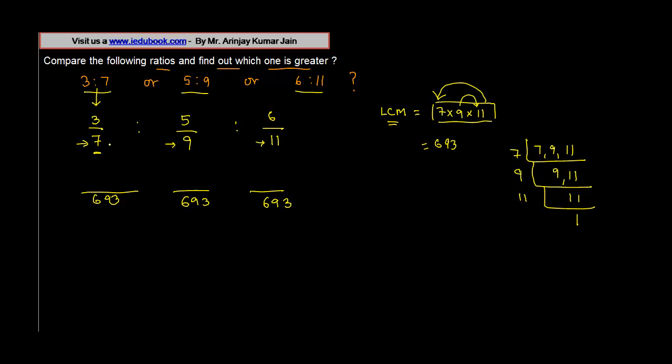If it is 7, then basically you have multiplied it with 9 and 11, so you need to multiply the numerator, this 3, into 11 into 9. Similarly for 5, 9 is already here, so you have multiplied it by 7 and 11. Similarly for this one, 6 into 11 is already here, so 7 into 9.